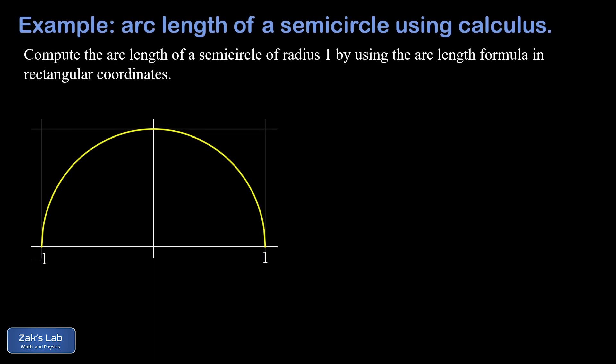In this video, we're computing the arc length of a semicircle of radius 1 by using the classic arc length formula from calculus. So before we get started, we need to actually have an equation for this curve. We need to think of it as a function of x.